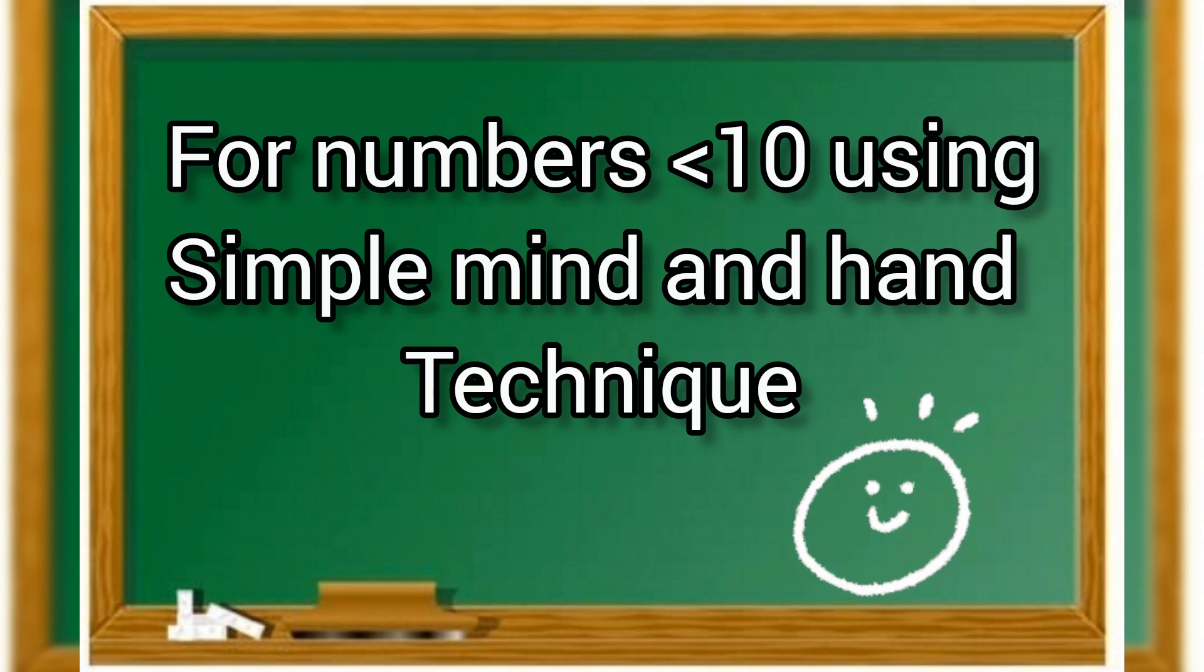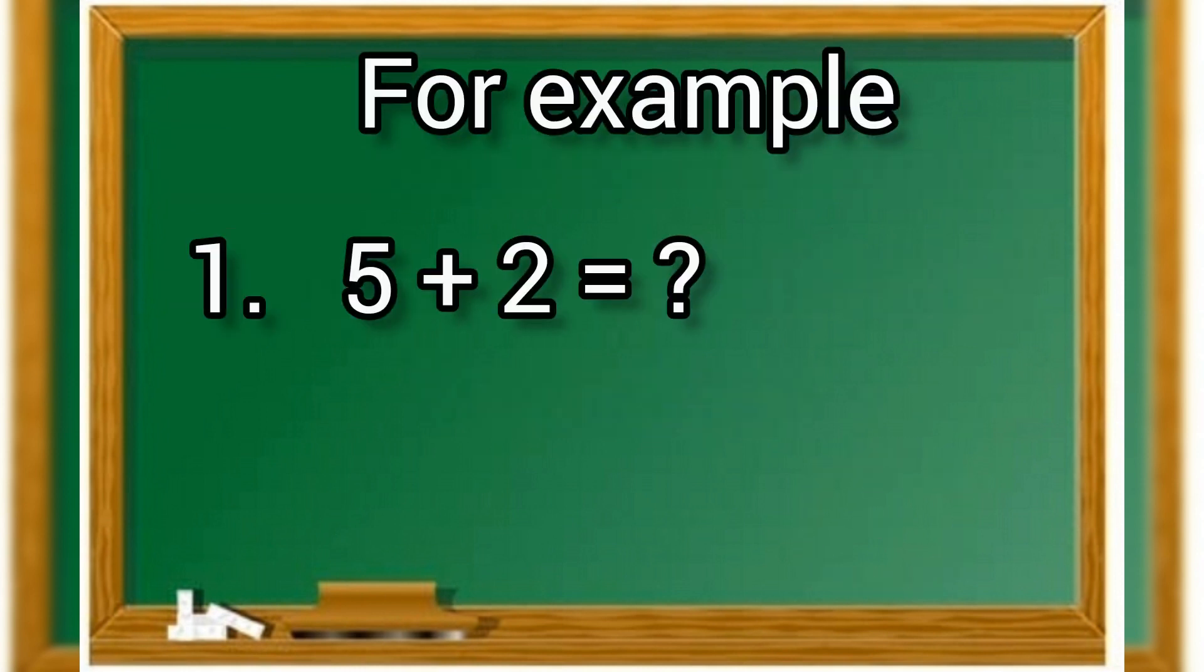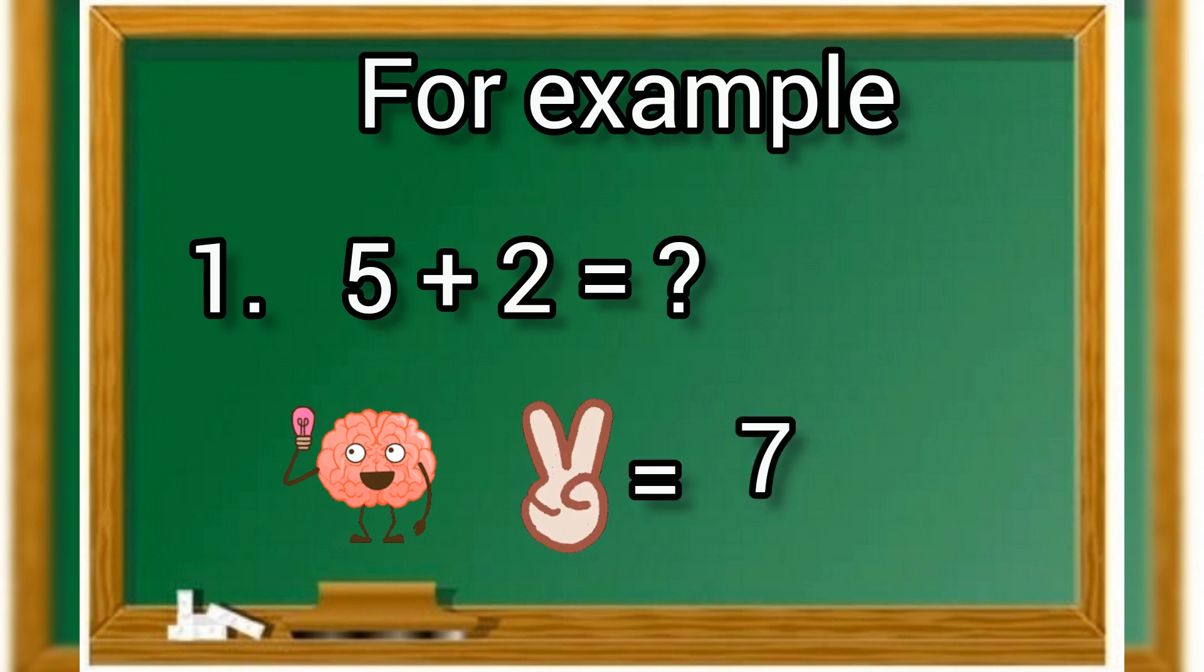For example, 5 plus 2 is how much? The technique is we have to keep 5 in mind and 2 in fingers. Let us count: 5 in mind, after 5 it's 6 and 7, so the answer is 7.